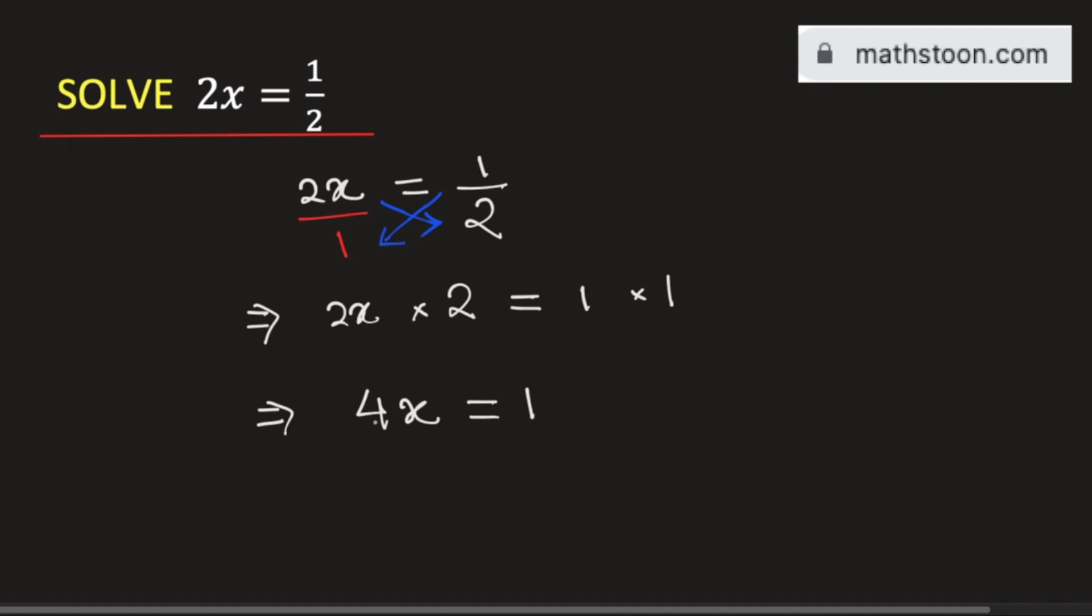The coefficient of x is 4, so we divide both sides by 4. This gives us 4x divided by 4 equals 1/4.